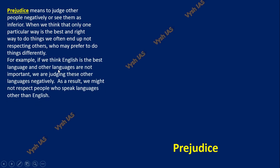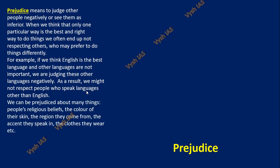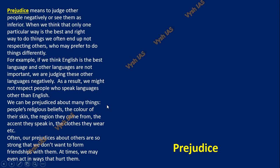For example, if you think English is the best language — in Karnataka they'll say Kannada is best, in Tamil Nadu they say Tamil is best. That decision that your thing is the best and the other thing is negative also falls under prejudice, because you tend not to respect people who don't understand your language. Religious beliefs, color of skin, the region they come from, the accent in which they speak — all can create prejudice. People from Northeast are sometimes compared to Chinese by their appearance or accent, and they face discrimination. Even in 2022 this is still happening. Prejudice is a very bad mindset that should not be practiced, and our prejudices about others can be so strong that we don't even want to form friendships with them.